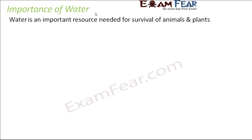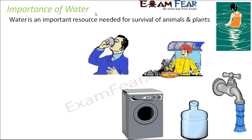Before we talk about water pollution, let us look at the importance of water. Water is extremely important for the survival of all life forms. It is an important resource without which plants and animals cannot survive. We use water for bathing, cooking, drinking, washing clothes, and washing utensils. Without drinking water, our body will dehydrate and we will not be able to survive. So water is an integral part of our life.